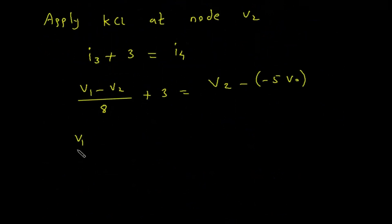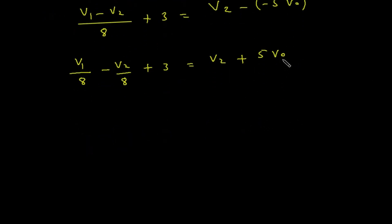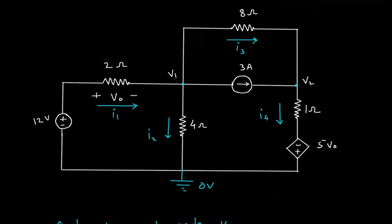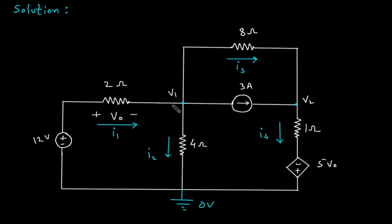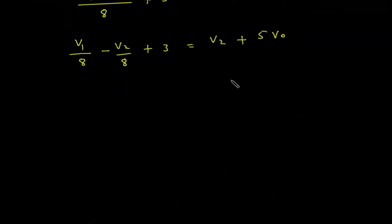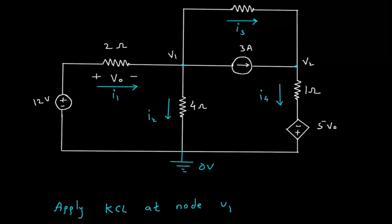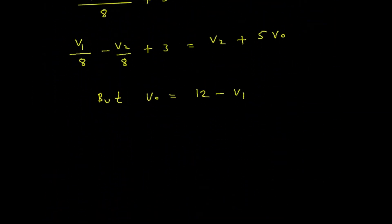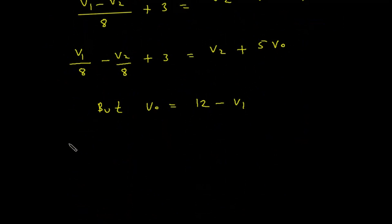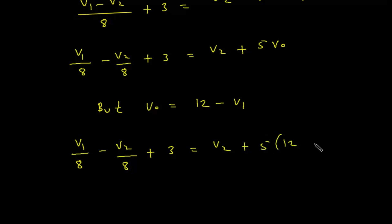This gives: V1/8 minus V2/8 plus 3 equals V2 plus 5·Vo. Now, from the circuit we can see that Vo equals 12 minus V1, so we substitute Vo equals 12 minus V1.